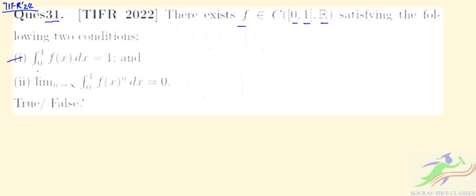Condition 1: integral from 0 to 1 of f(x)dx equals 1. Condition 2: limit as n tends to infinity of integral from 0 to 1 of f(x)^n dx equals 0.